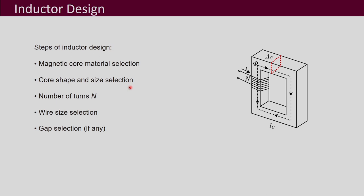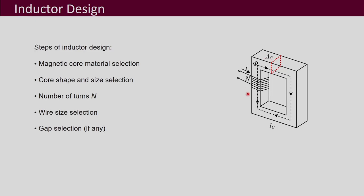Next is core shape and size selection. There are many different shapes and sizes of cores available and there is no fixed choice. Depending on your power rating and the size of your inductance, you may have an idea of which core shape and size is suitable. Looking at the charts and tables provided by manufacturers, you can choose your core shape and size. Your inductor design involves the core, plus conductors wound on it with a specific number of turns, and you must decide the wire size.